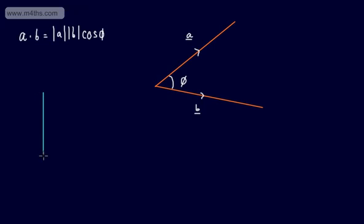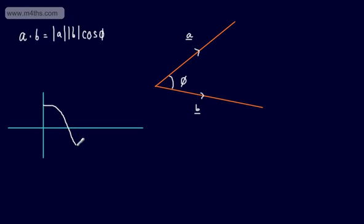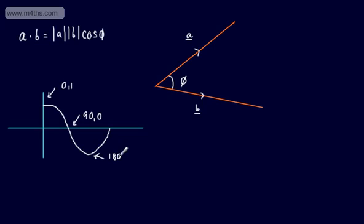Let's do a quick sketch of cos theta. At zero degrees, cos theta equals one. We come down and round to 90 degrees where the value is zero, then continue down to 180 degrees where cos theta equals minus one, then back up. So we have the key points: (0, 1), (90, 0), and (180, −1). This is the graph of y equals cos theta.